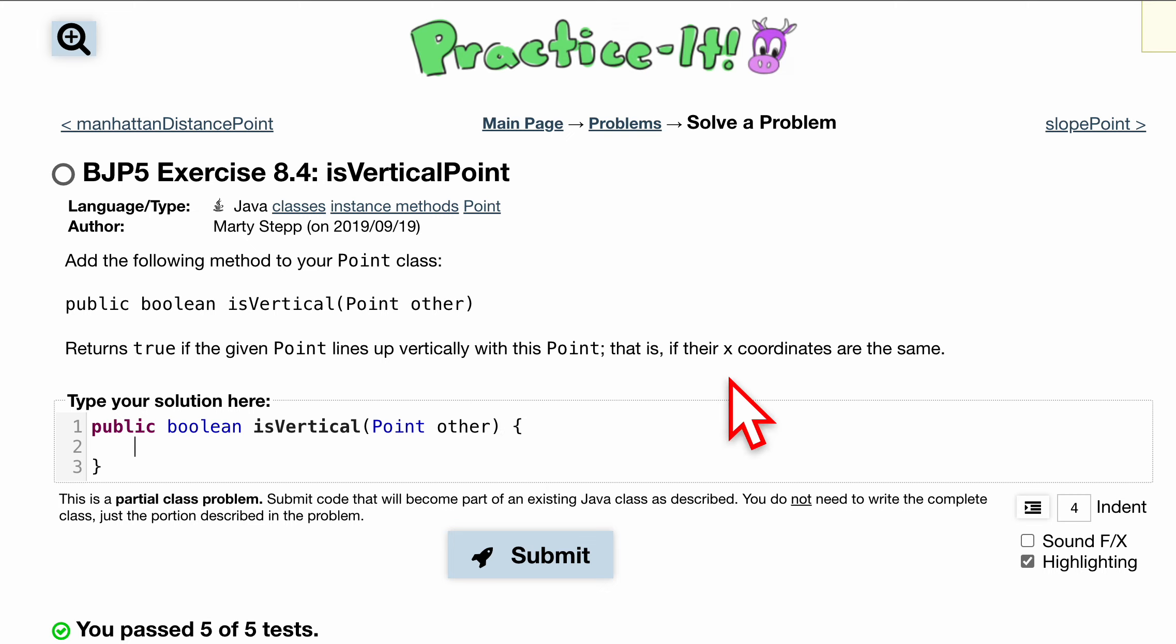So if the x-coordinates are the same, it wants us to return true, otherwise return false. We want to see if it's vertical or not, and it being on the same x-coordinate would make it so.